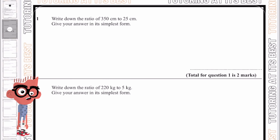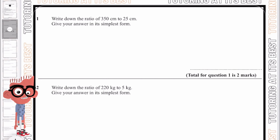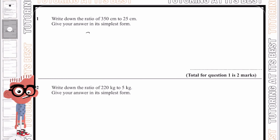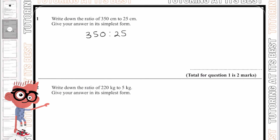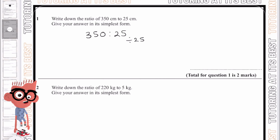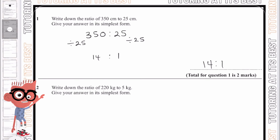Okay, question number one. Write down the ratio of 350 to 25 centimeters in the simplest form. The first thing I'm going to do is write this out and then find a common number between 350 and 25. We know that 25 goes into both numbers, so that's our highest common factor. We divide both sides by 25, which gives us 14 to 1. And so that is our answer: 14 to 1.